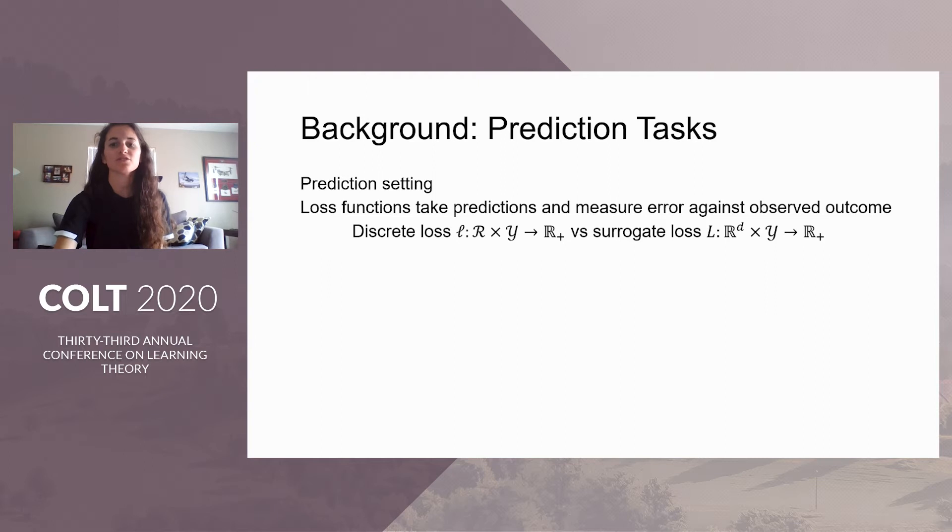Discrete loss functions are often intuitive to construct but hard to optimize, such as 0-1 loss. We denote these with script L. Instead, we optimize a corresponding surrogate loss, such as Hinge or Logistic Loss, denoted with capital L. These surrogates take reports in d-dimensional reals, and so we'll call the surrogates themselves d-dimensional.